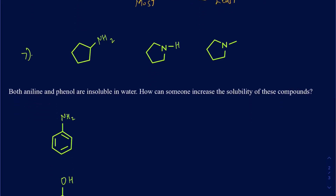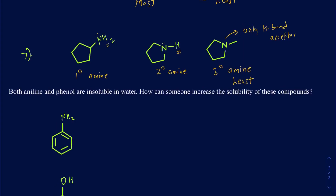Sometimes you compare how many hydrogen bonds a compound can make. In this example, the first structure is a primary amine with two hydrogens on nitrogen — those are hydrogen bond donors, and nitrogen is also a hydrogen bond acceptor. The second structure is a secondary amine with one hydrogen — a hydrogen bond donor and acceptor. The third is a tertiary amine with no N-H hydrogens, so it is only a hydrogen bond acceptor. Since it has no hydrogen bond donors, the tertiary amine is the least soluble, and the primary amine with two hydrogen bond donors is the most soluble in water.